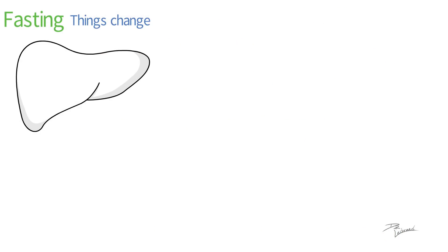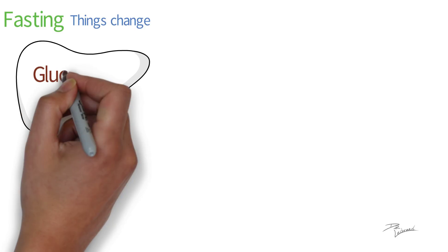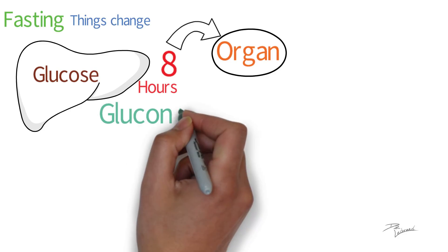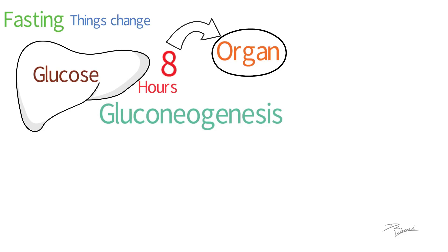The liver will continue to hold a reserve of glucose for about eight hours. After this time, it will have released all the glucose that was reserved within the organ. This causes a state of gluconeogenesis. This is the point where the body really enters into a state of fasting.